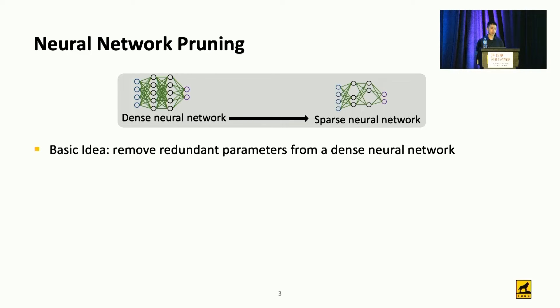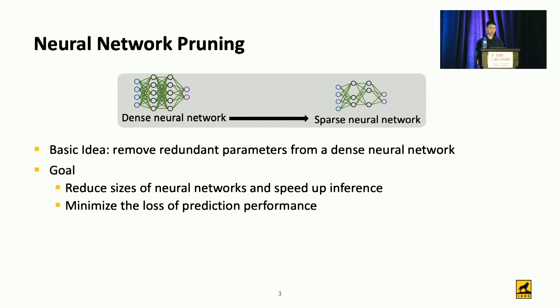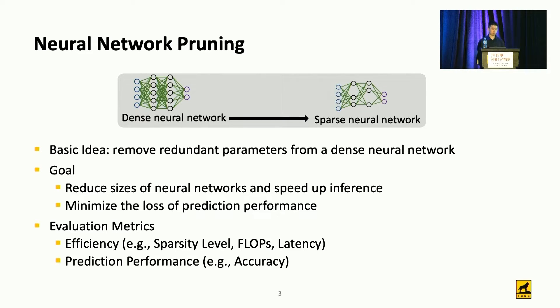One of the promising approaches to address this challenge is neural network pruning. The basic idea is that given a dense neural network, we remove the redundant parameters to derive a sparse neural network. There are two goals: first, to reduce the size of the neural network and speed up inference time; second, to minimize the loss of prediction performance. To evaluate pruning, we use two metrics — efficiency and prediction performance such as accuracy — and most pruning approaches seek a good balance between them.